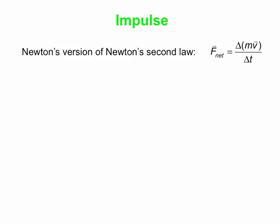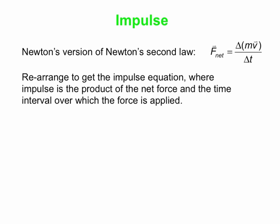Let's start talking about what we call impulse. There's Newton's version of the second law of motion, and we're just going to rearrange this a little bit. We'll get what we call the impulse equation. The impulse is the product of the net force multiplied by the time interval during which that net force acts.